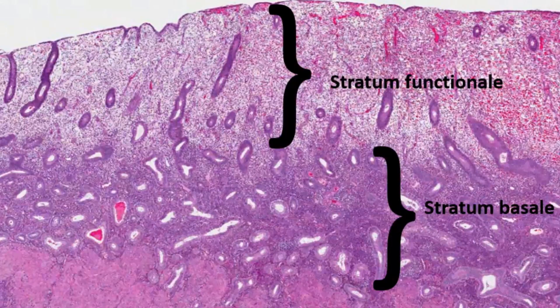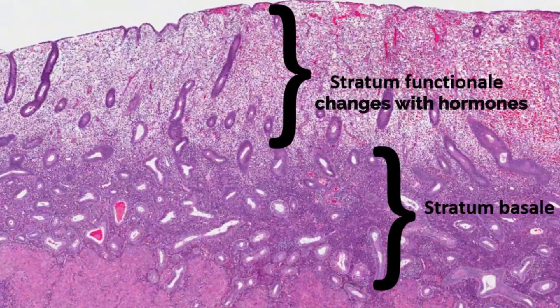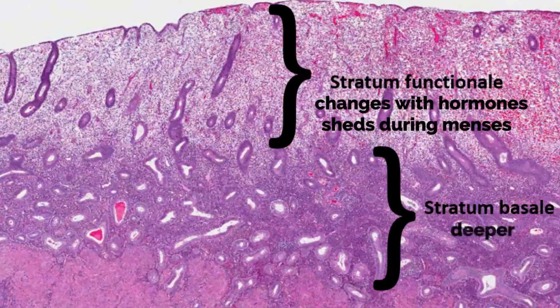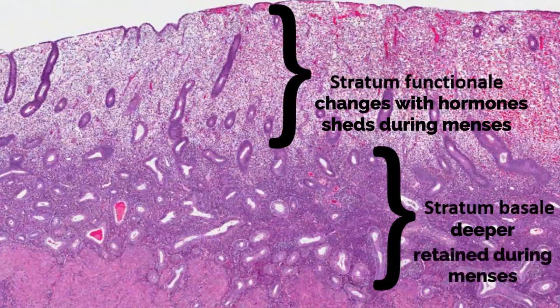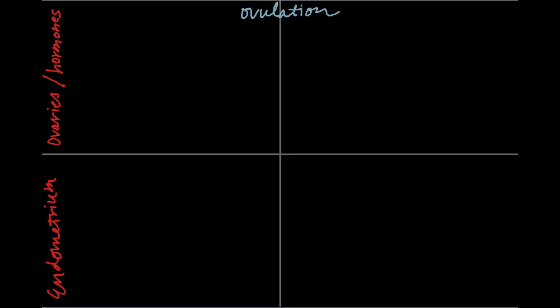The stratum functionelle is a temporary layer at the surface of the uterine lumen. It fluctuates with hormones and sheds during menses. The stratum basale is a deeper permanent layer; it contains the basal portion of the endometrial glands and is retained during menses. Throughout the menstrual cycle the endometrium fluctuates in response to hormones. Using this diagram we will look at these changes, with the ovary and hormones in the top half and the endometrium in the bottom half.